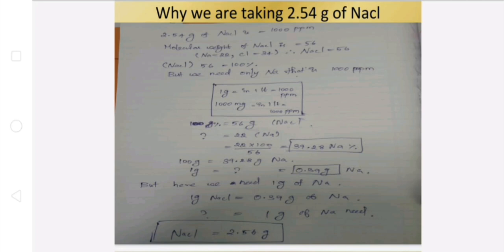First, molecular weight. Molecular weight of sodium chloride is 56. Sodium is 22, chloride is 34. Sodium chloride is 56. 56 is 100%. 39.55% because 22 out of 56. Cross multiplication.